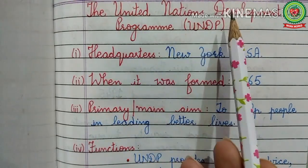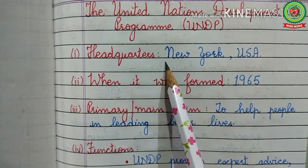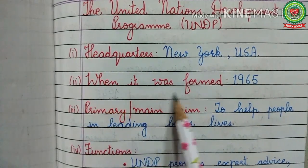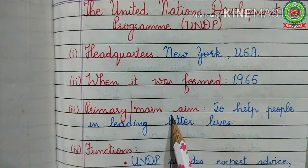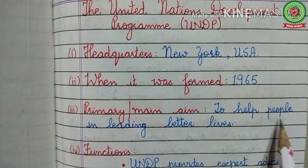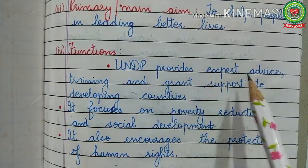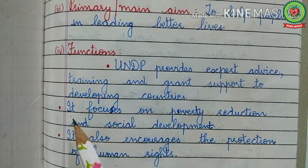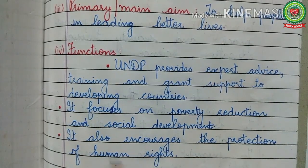The United Nations Development Program (UNDP) — headquarters: located in New York, United States of America. When it was formed: 1965. Primary or main aim: to help people in leading better lives. Functions: UNDP provides expert advice, training, and grant support to developing countries. Second, it focuses on poverty reduction and social development. Third, it encourages the protection of human rights.